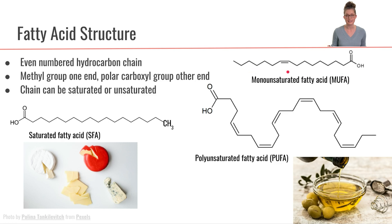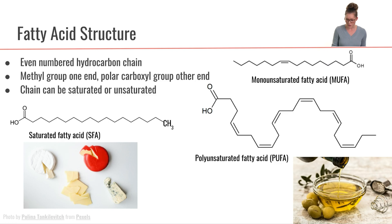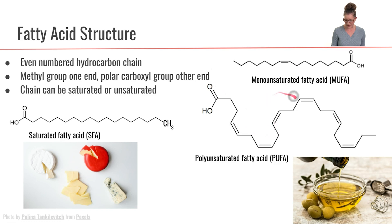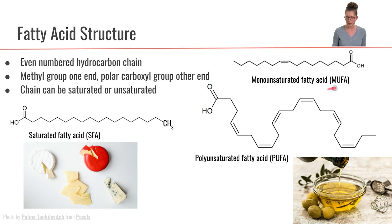The hydrocarbon tail can also have some double bonds in it, and that would make it an unsaturated fatty acid. We have one category where we see only one double bond — that would make it a monounsaturated fatty acid, mono for one. And then there are also examples of fatty acids that have two or more double bonds in them, and those would be categorized as polyunsaturated fatty acids, or PUFA. So frequently you'll see the abbreviations MUFA for monounsaturated fatty acid and PUFA for polyunsaturated fatty acid.